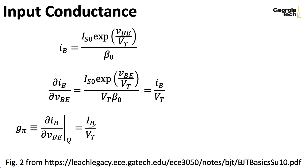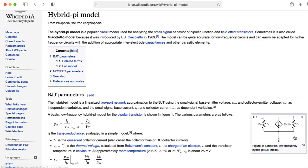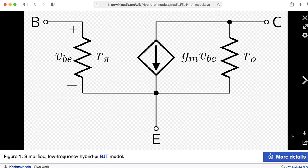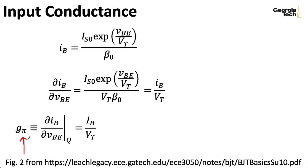The reason we'll call that pi is that this is used in something called the hybrid pi model that we'll look at next time. And again, this is usually expressed in terms of resistance, and I'll do that in a second.